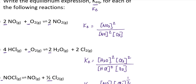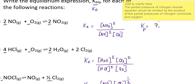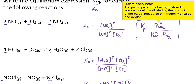It's also important to note, particularly for gas-phase reactions, that we can write an equilibrium constant based on partial pressures instead. That equilibrium constant is referred to as Kp, and it is constructed much the same way as Kc, with the exception that we use partial pressures instead of equilibrium concentrations. For example, that would be the partial pressure of NO2 squared divided by the partial pressure of NO squared times the partial pressure of oxygen.